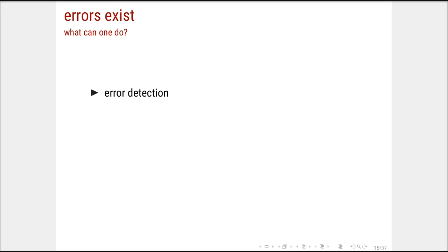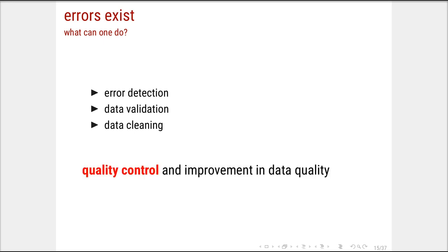Errors exist and ignorance exists — so what can we do? We need to detect the errors, validate the data whether good or bad, and perform data cleaning when needed. This process is part of quality control and improvement of data quality. When we clean data, we are improving our own data input. This process applies not only when dealing with huge databases or data others collected, but even when we collect our own data, we have to be careful about errors that can exist.